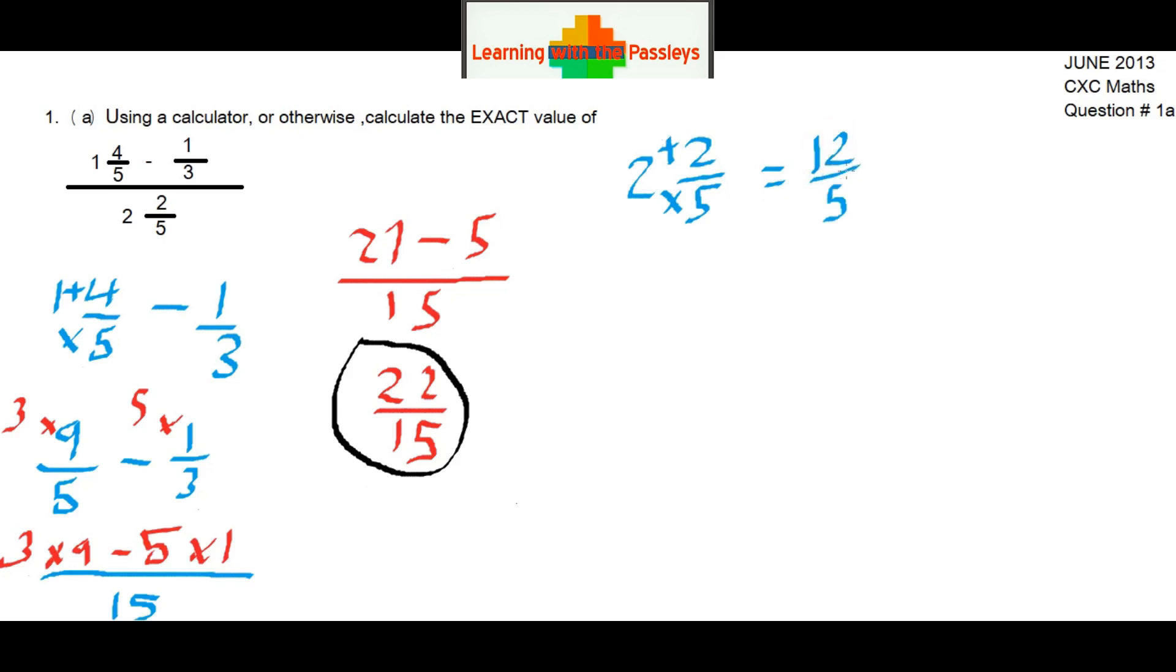Now we have one term for the numerator and one term for the denominator. We're going to combine both. So we can write 22/15 divided by 12/5.